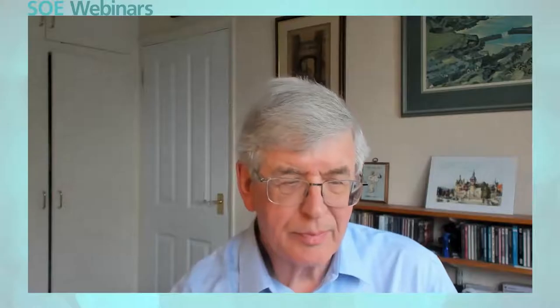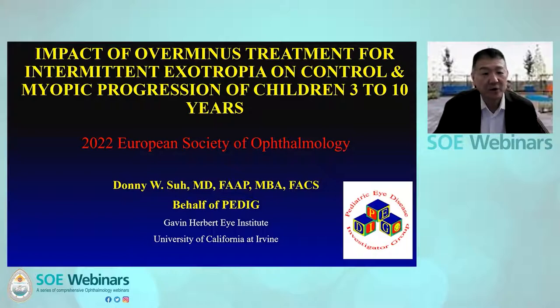We continue on the theme of intermittent exotropia. Our next speaker is Donnie Su from the University of California at Irvine, and he's going to talk about the use of over-minus lenses in children with intermittent exotropia. Donnie, over to you. Thank you. My name is Donnie Su. I will be presenting the results from the randomized trial evaluating effectiveness of over-minus spectacles in children with intermittent exotropia or IXT, on behalf of the Pediatric Eye Disease Investigator Group.